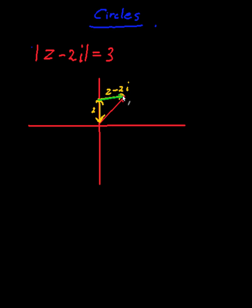I will end up with z minus 2i pointing that direction. So basically what it's saying is that the length of this vector has to be equal to 3.